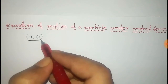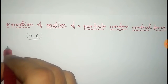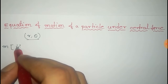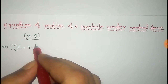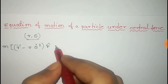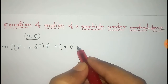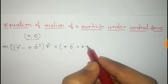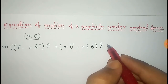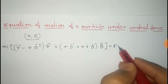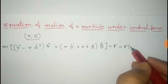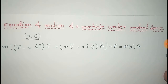The equation of motion in plane polar coordinates is given by M times R double dot minus R Theta dot squared in the R-cap direction — that is the radial component — plus R Theta double dot plus twice R dot Theta dot in the Theta-cap direction — that is the angular component. This equals the central force, which is a function of R, that is F(R) in the R-cap direction, since that force is radial.